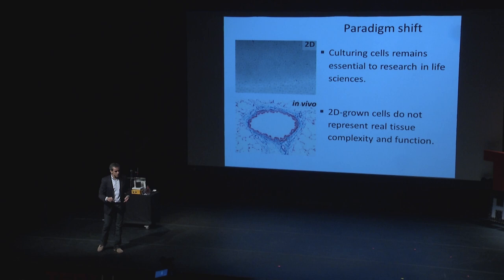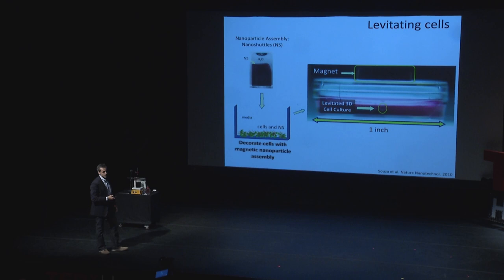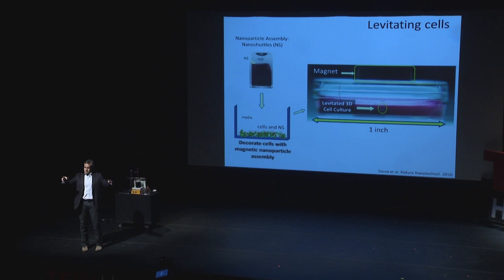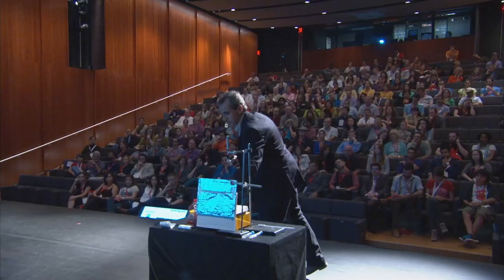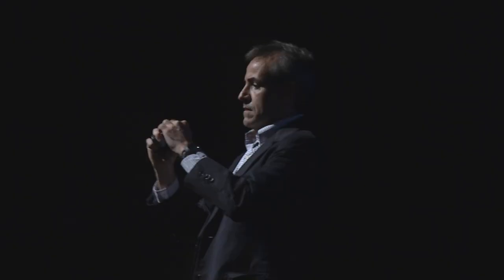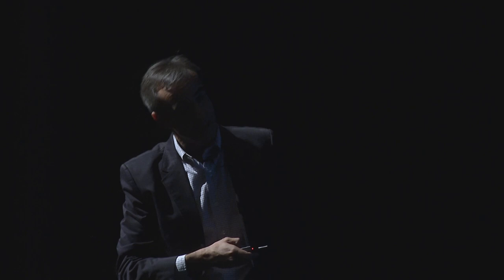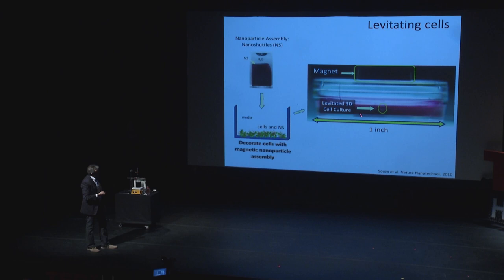So how do we provide the 3D environment? We have what we call the nano shuttle. The nano shuttle is a nanoparticle assembly of gold nanoparticles and iron oxide — the iron oxide is the magnetic part. If you envision a cell as a sphere, you decorate this cell with magnetic nanoparticles, just like a Christmas tree. Then you put a magnetic field on top, just like a magnet right on top, and the cells feel the field, they come up — the nanoparticles carry the cells to the top and bring them together. This little sphere here is a glioblastoma spheroid levitating for 48 hours. You take the magnet out, it goes back to the bottom. Put it back — it's a 3D structure.